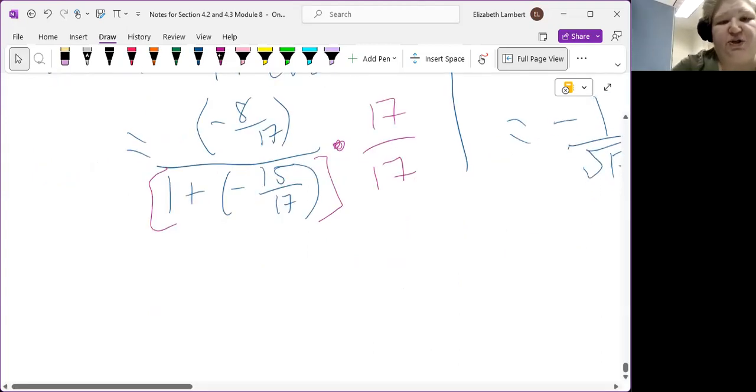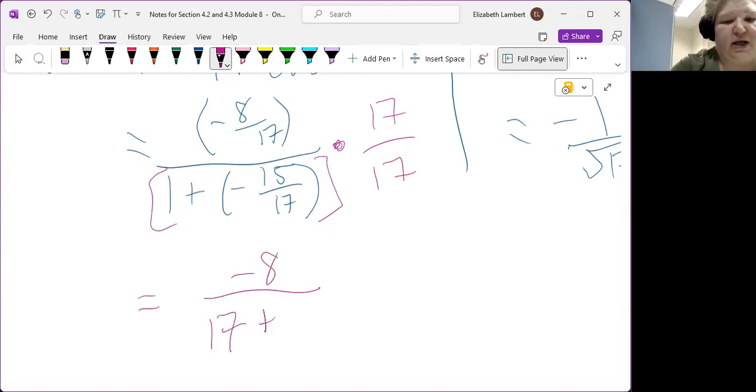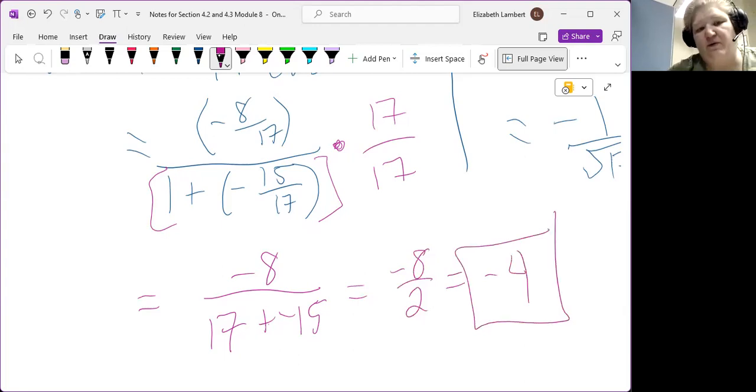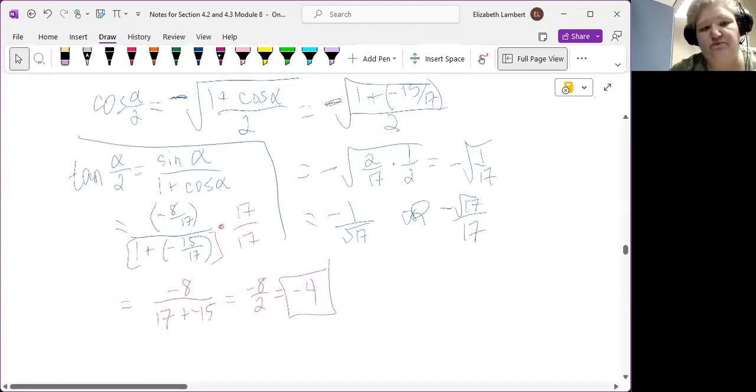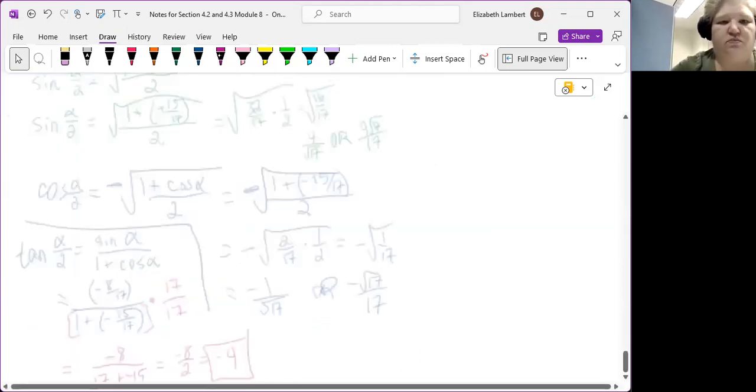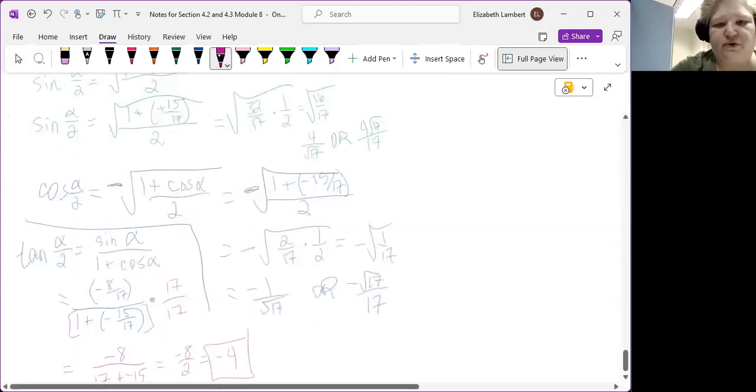I'm going to multiply the whole big fraction by 17 over 17. So on top, we just have negative 8. On the bottom, we get 17 plus negative 15. So 17 plus negative 15 would be 2. So negative 8 over 2 is negative 4. Negative the way we first determined it should be. And it is equivalent to the sine over the cosine.